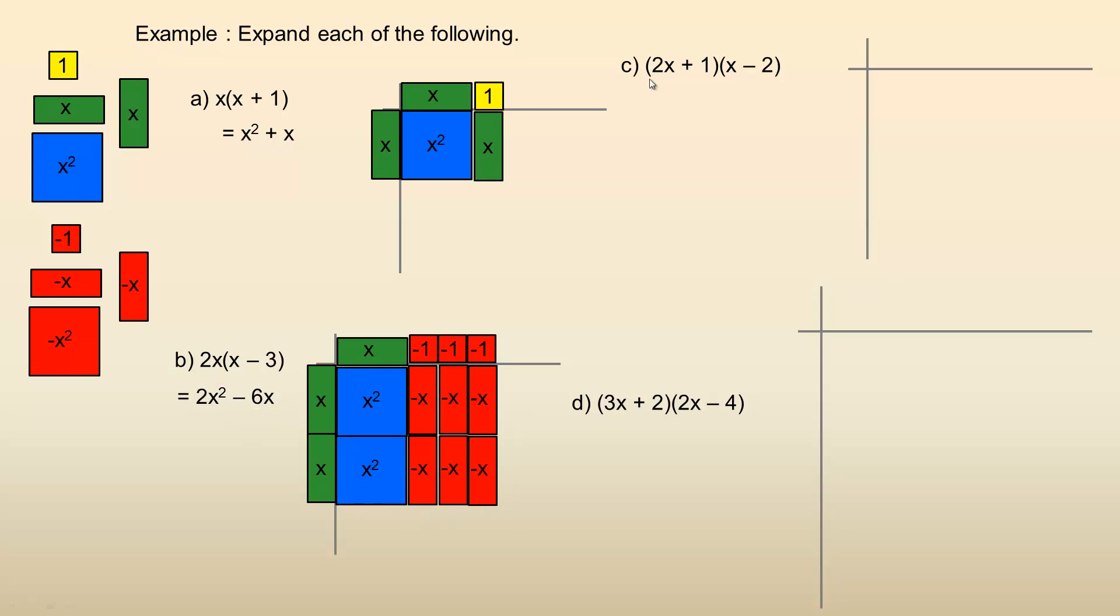So the first binomial product, two X plus one times X minus two. So two X plus one, I'm going to put down the side here. So two X plus a one and then X minus two across the top. So X and then minus two. So what fills this? This would be one of those positive X squareds and same here. So the product starts with a two X squared. So that comes from multiplying two X by X.